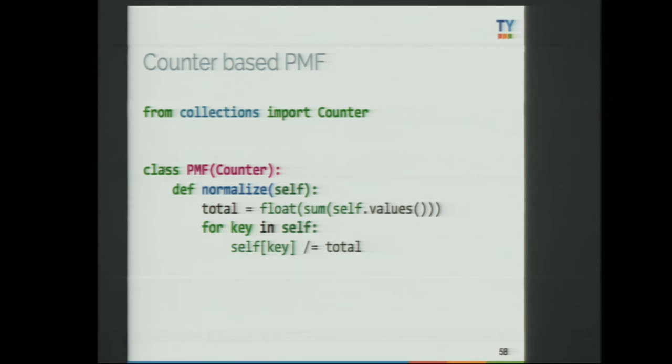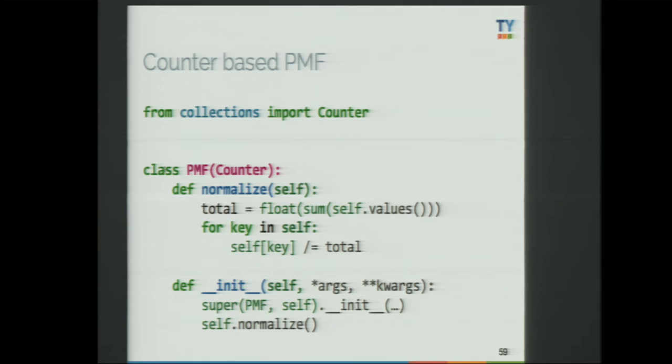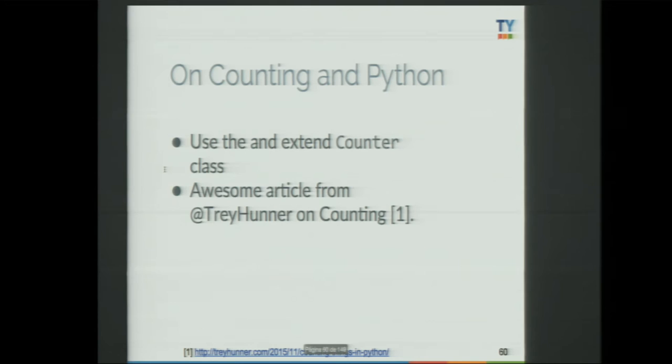If you want to overload the initializer to call normalize as soon as you have all the items in the Counter, you can do that also. So when you're counting things in Python — using statistics, Pandas, or scikit-learn — when you're building features, you should totally check out the Counter class. There's a really nice article from Trey Hunter about how historically the counting process has been developed in Python.